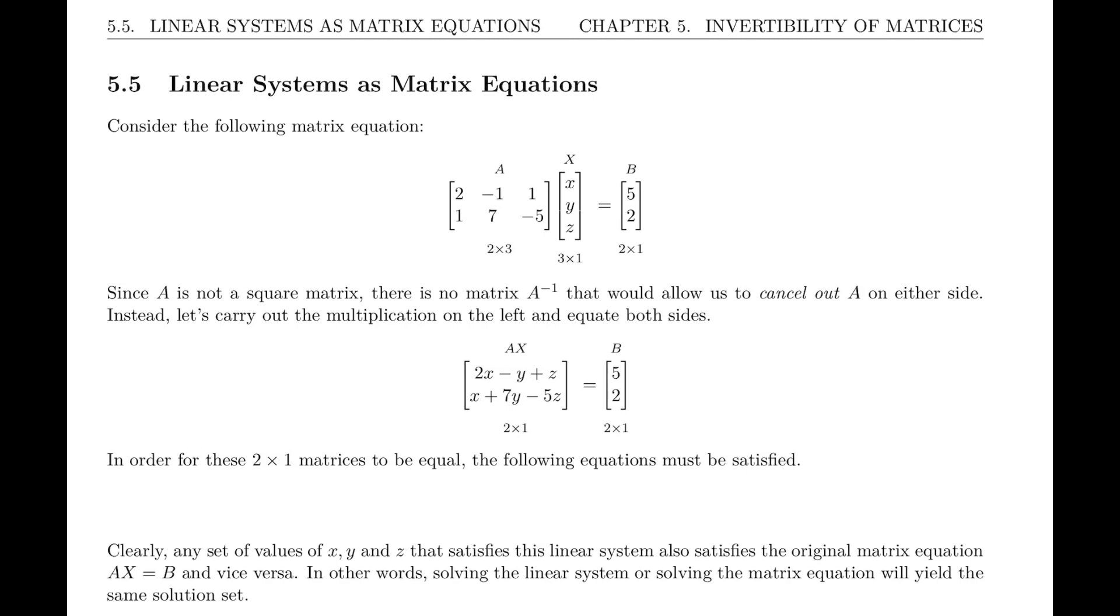Consider the following matrix equation. You notice the matrix we've put down is a 2 by 3, x instead is a 3 by 1, so x is the matrix of unknowns, and therefore b has to be a 2 by 1. Because the middle numbers are the same, and the outside numbers, 2 by 1, give us the size of the resulting matrix.